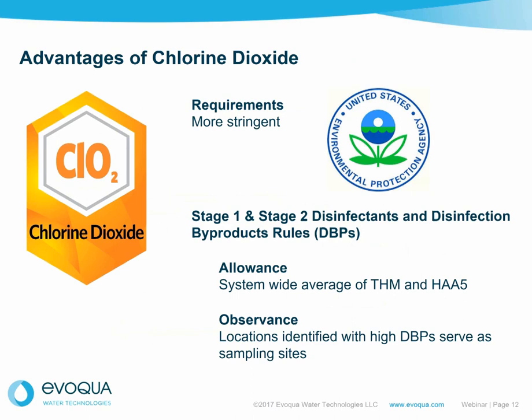Chlorine dioxide has really come to the fore in the last decade because of the increased rigor we see with disinfection byproduct rules. The original disinfection byproduct rule allowed sampling across the whole reticulation system and taking a system-wide average. The rule has been tightened — it's no longer a system-wide average. You have to identify the locations with the highest disinfection byproducts, and those become the sampling sites. It has become much harder to meet the disinfection byproduct rule, and hence the use of chlorine dioxide has grown dramatically.